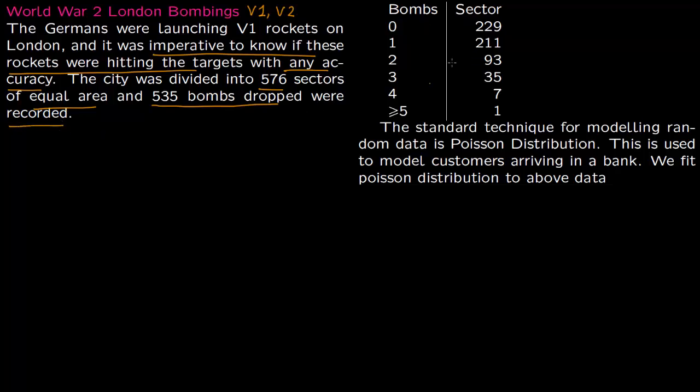This is the table in which the bombs and the sector are given. 229 sectors received no bombs, 211 sectors received one bomb, 93 sectors got two bombs, 35 sectors got three bombs, seven sectors got four bombs, and one sector got more than five bombs.